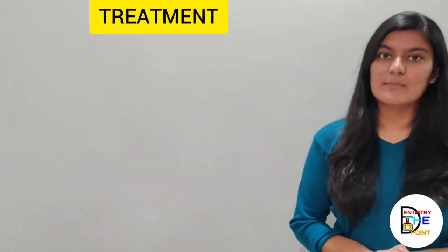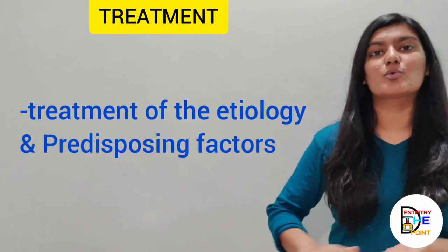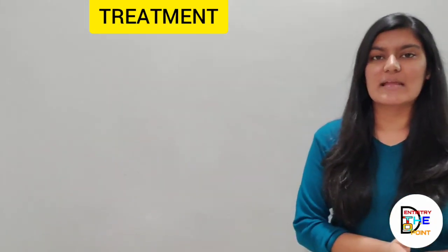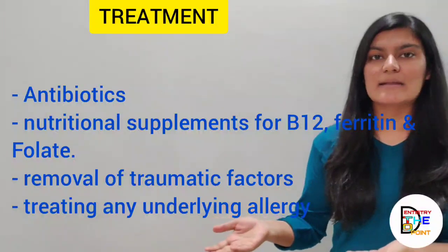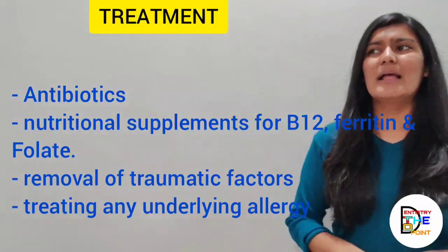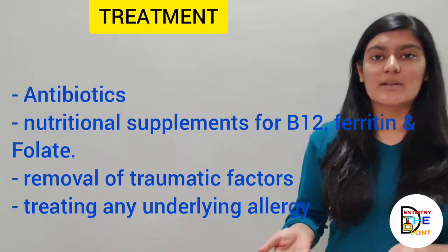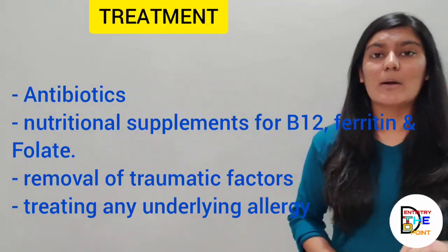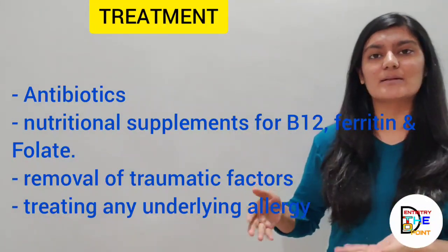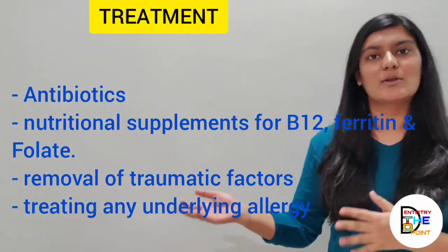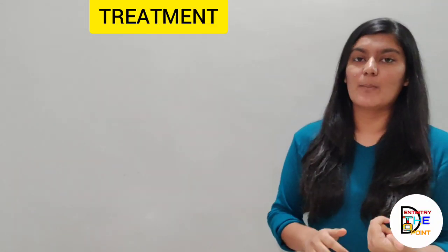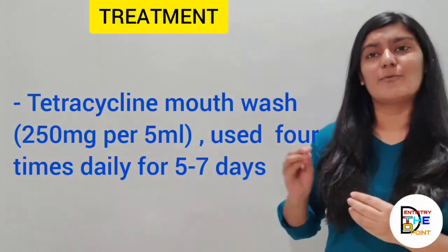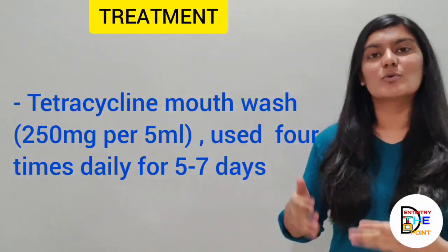Moving to treatment: the first approach is ruling out or correcting etiological and predisposing factors. If bacterial infection is identified, antibiotics are prescribed. Immunological abnormalities such as iron, folic acid, or B12 deficiencies are corrected with supplements. Predisposing factors like trauma or underlying allergy are also corrected, which ultimately helps treat or control RAS. For herpetiform type, tetracycline mouthwash 250 mg per 5 ml, four times a day for five to seven days, can be prescribed.